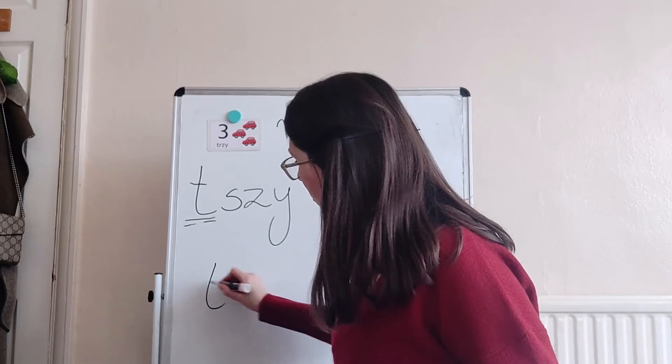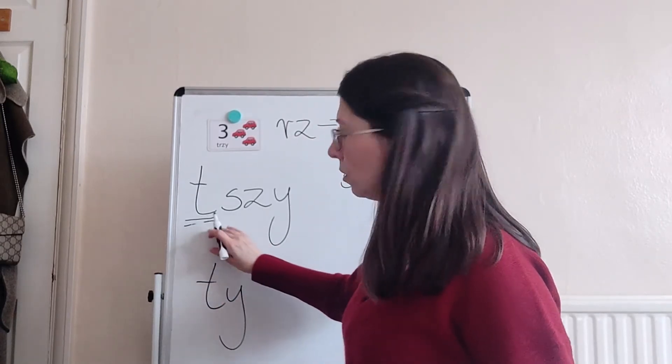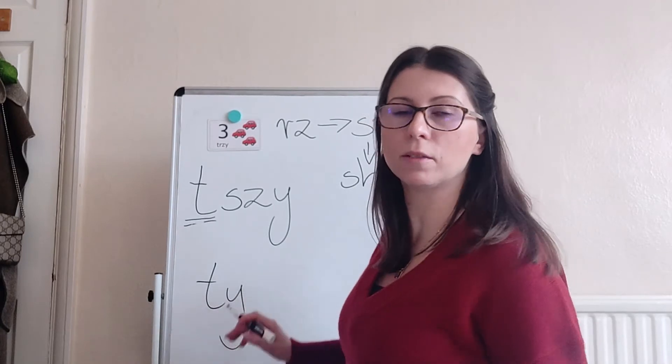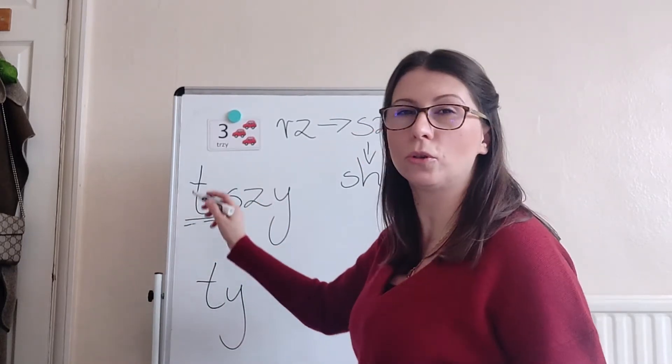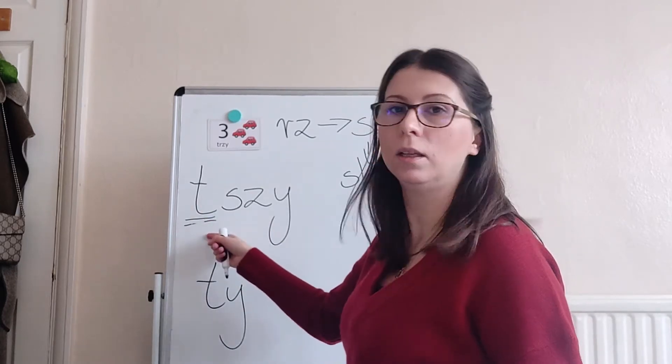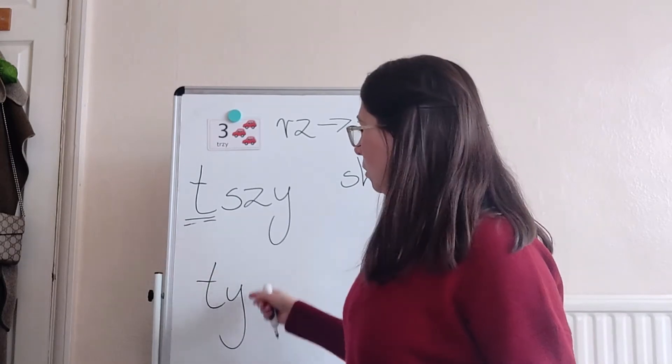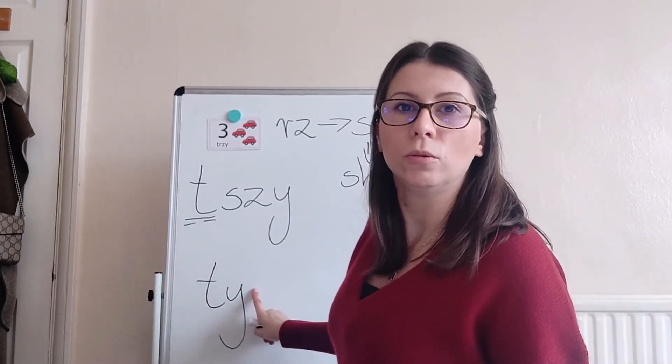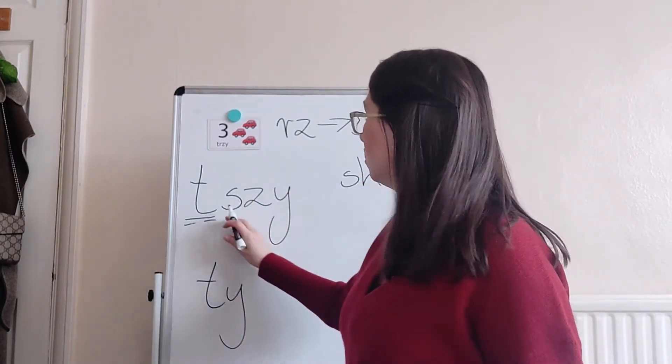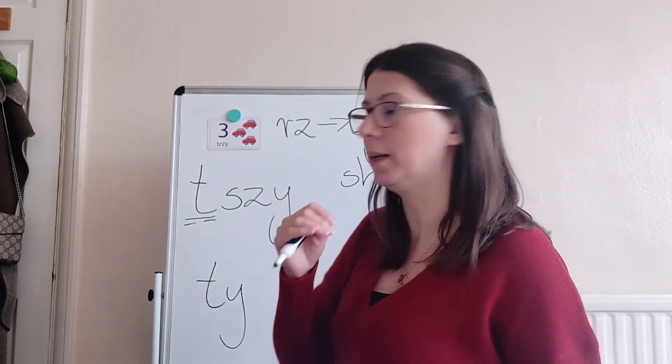So please, first thing: we don't want this 'u', right? We just want the beginning, and then you need to connect it basically immediately with the rest of the word. So don't even go like 'tu' with your mouth, you need to straight away connect it to 'trzy'. Trzy, trzy, okay?